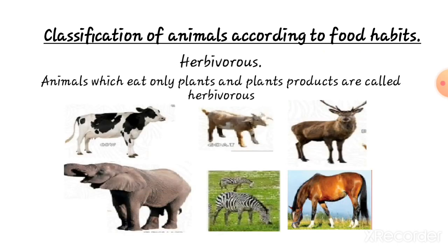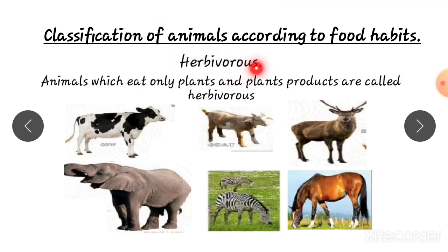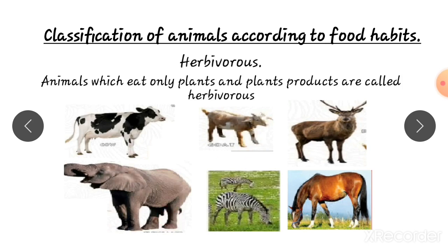The first type is herbivores. Animals which eat only plants and plant products are called herbivores. Examples of herbivores are cow, goat, deer, elephant, zebra, and horse. These animals eat plants and plant products.